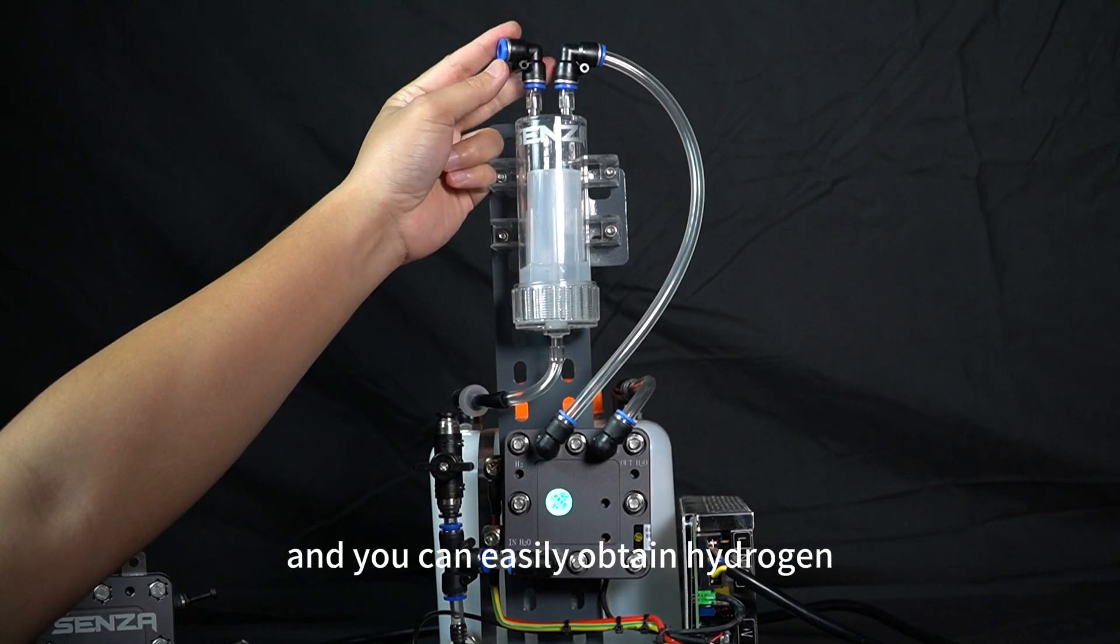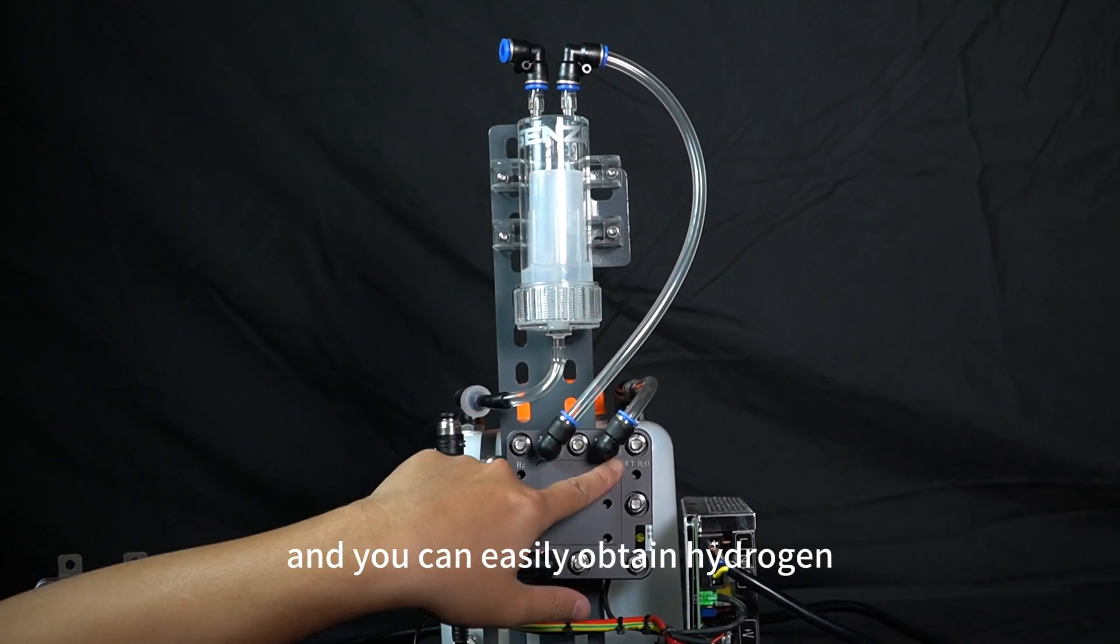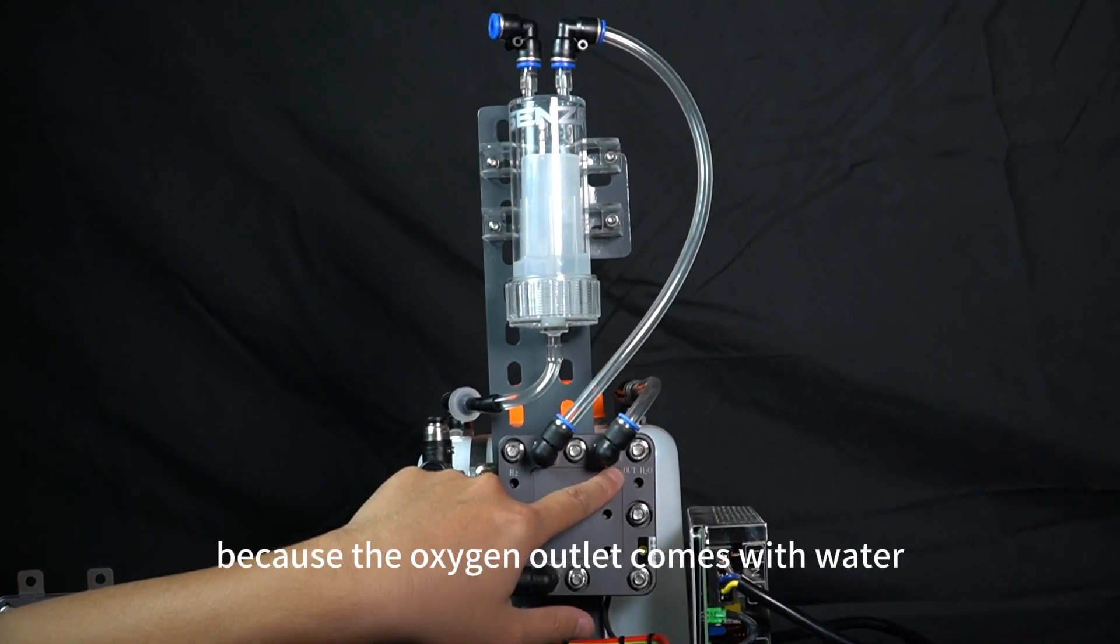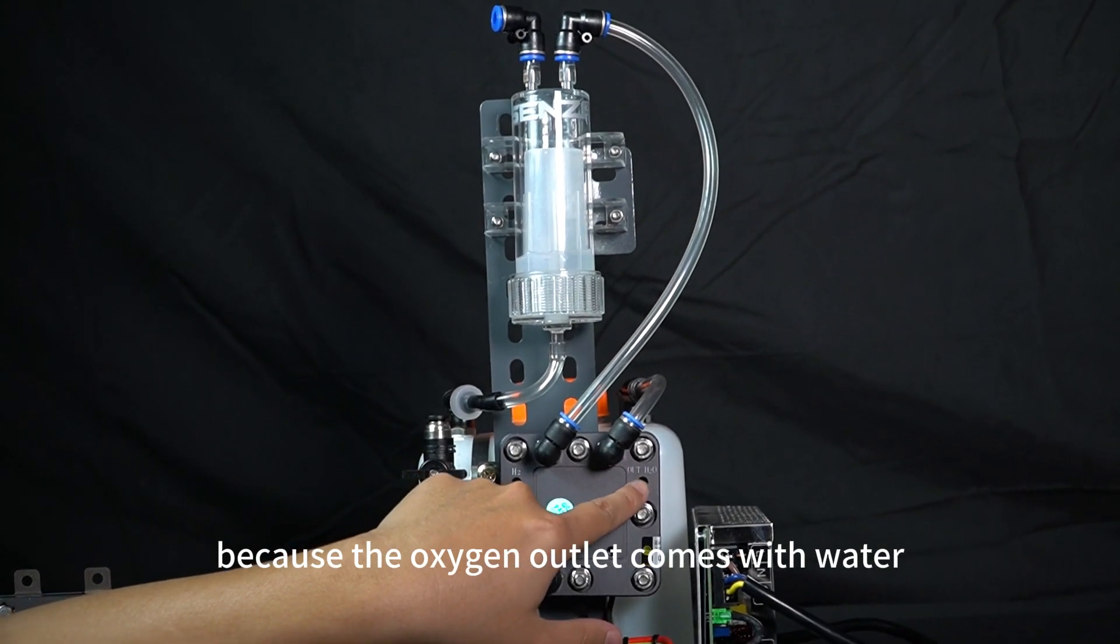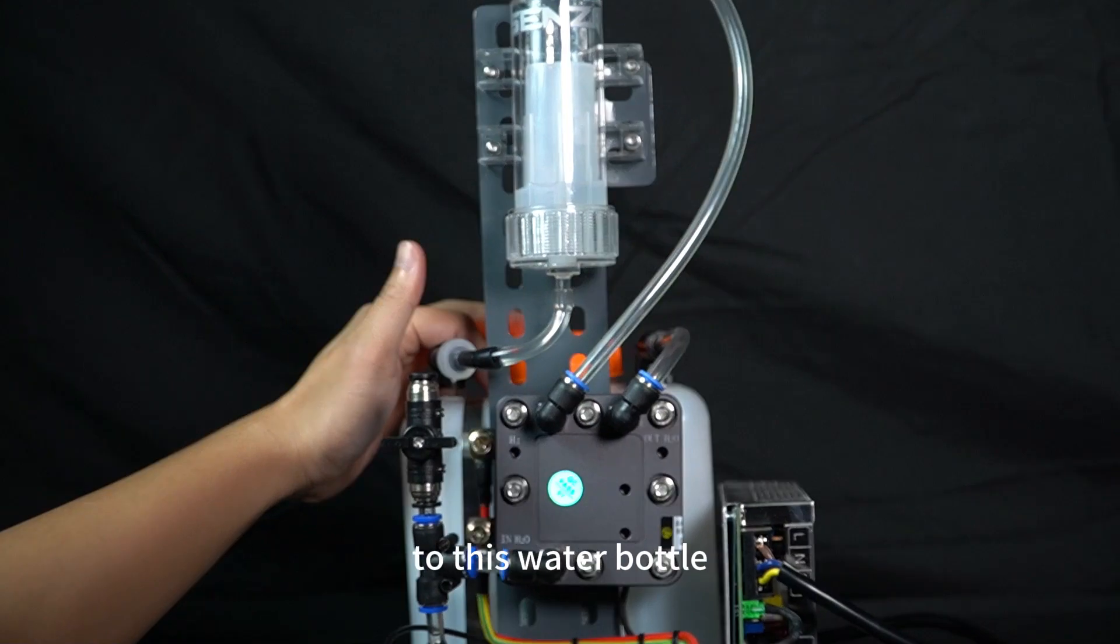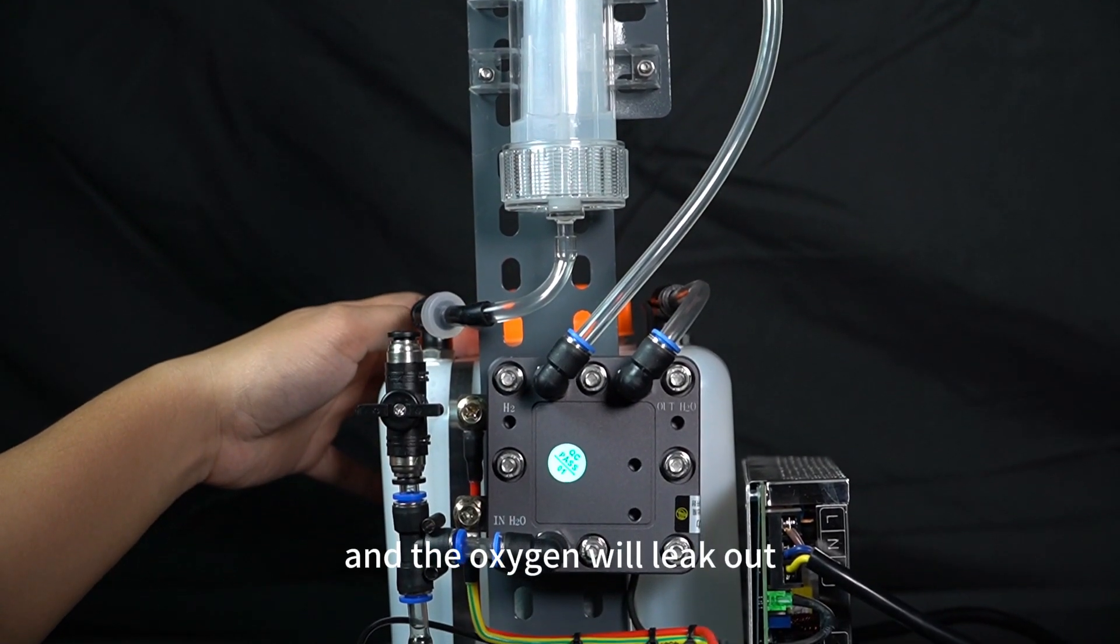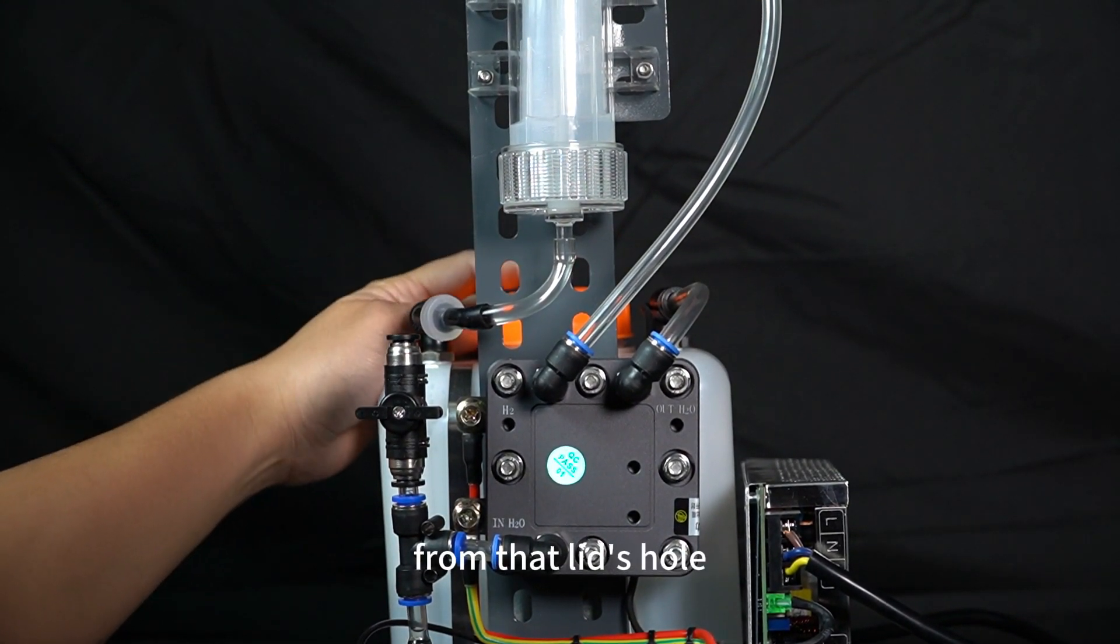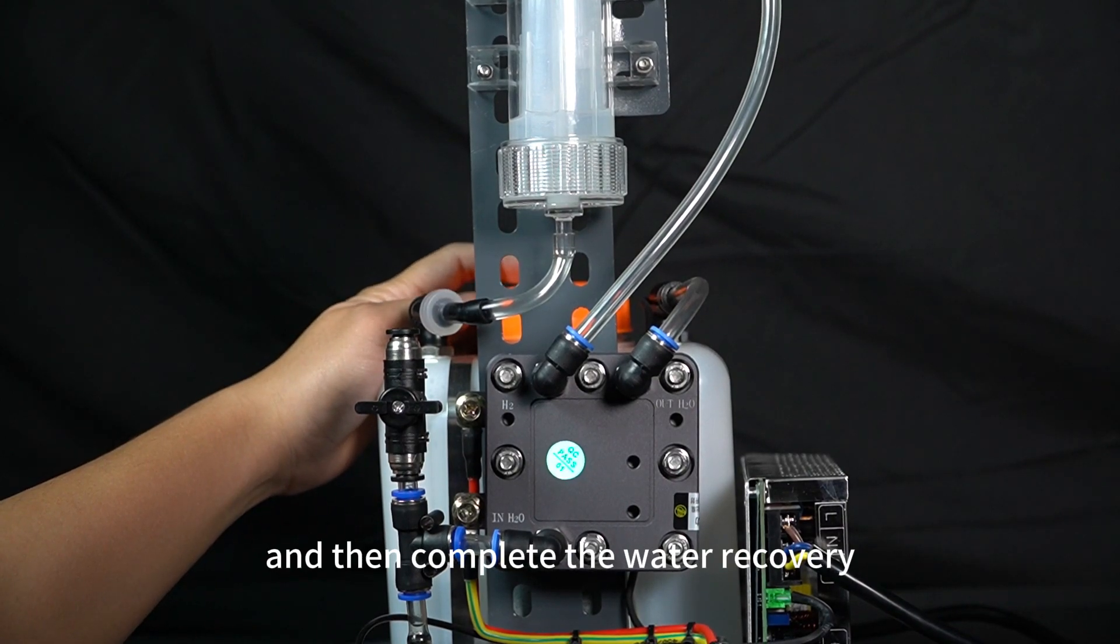Then you connect a tube, and you can easily obtain hydrogen. Because the oxygen outlet comes with water, the water comes back here with the oxygen to this water bottle, and the oxygen will leak out from that lid's hole, and then complete the water recovery.